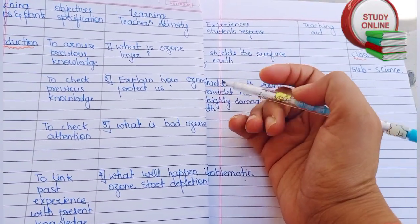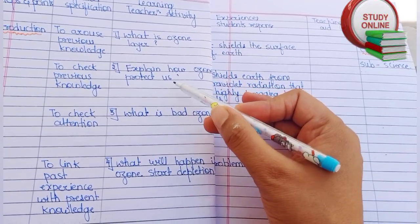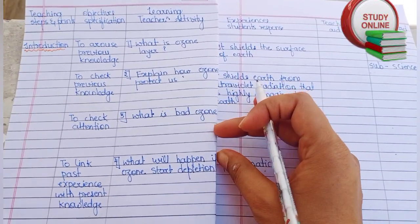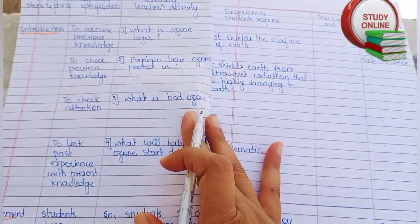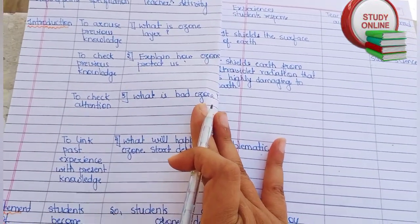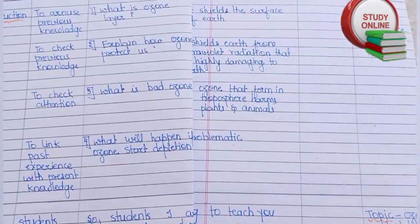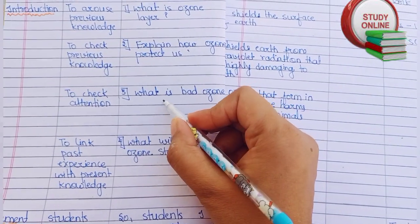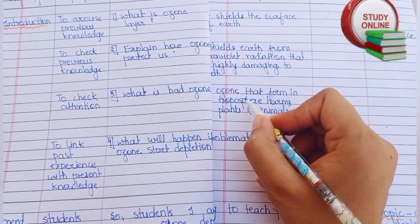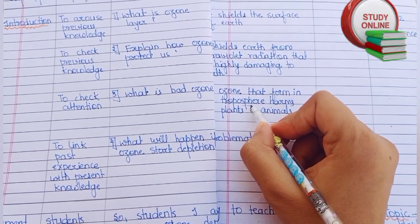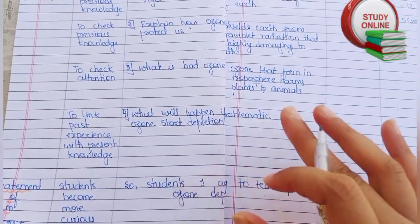Now comes the main part. We first ask: what is the ozone layer? The student will answer it is a shield that shields the surface of earth. Then we ask how ozone protects us — the student will answer it shields earth from ultraviolet radiation that is highly damaging. Third question: what is bad ozone? The student will answer ozone that forms in the troposphere and harms plants and animals.